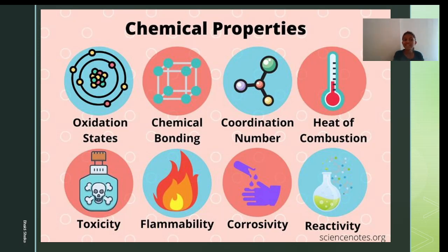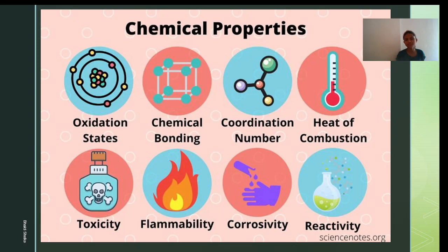Chemical properties of matter include oxidation states — if you have a metal, by the process of oxidation you can change its chemical properties. Chemical bonding changes by mixing various chemicals; other examples include coordination numbers, heat of combustion, toxicity, flammability, corrosivity, and reactivity. You will learn about these in another chapter, so let's focus on physical properties in this first chapter.